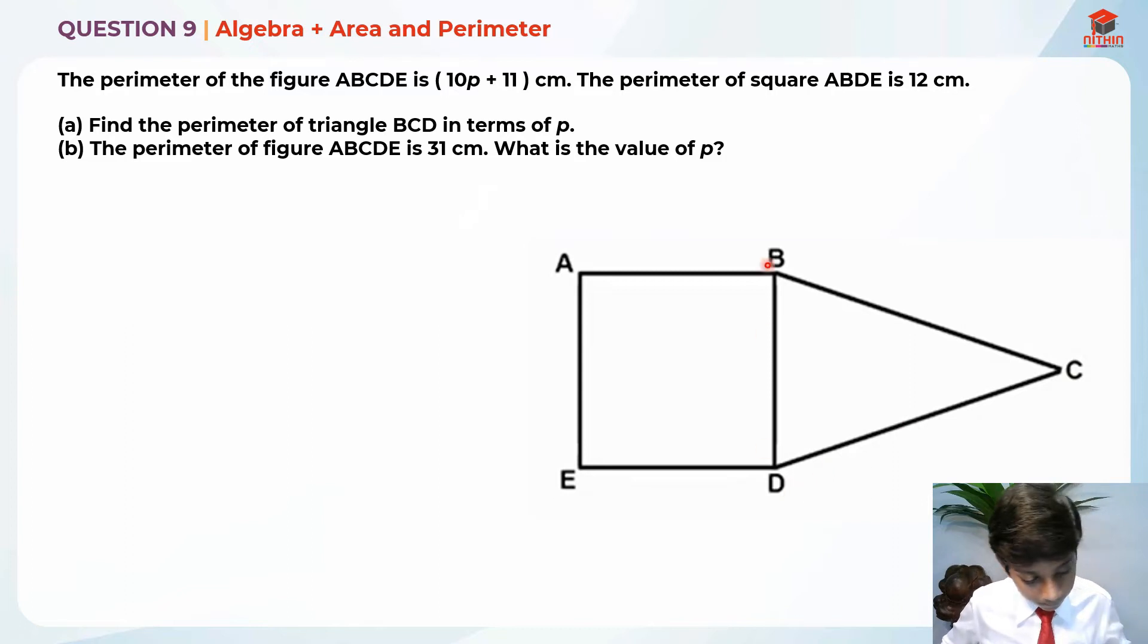So this is BCD. And they're telling that the square ABDE is 12cm. So let me highlight the key information. Perimeter of figure ABCDE is 10p plus 11cm. Perimeter of square is 12cm. Telling us to find the perimeter of triangle in terms of p. So they've given us this information that the square is 12cm.